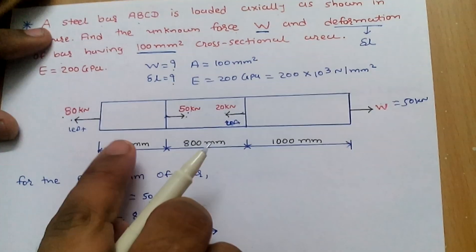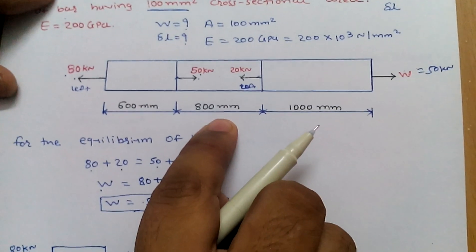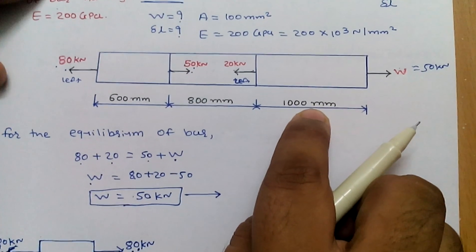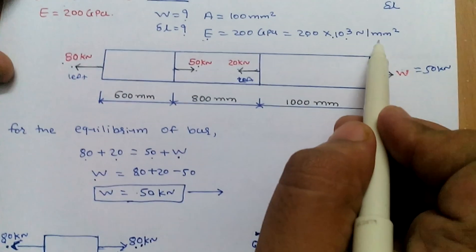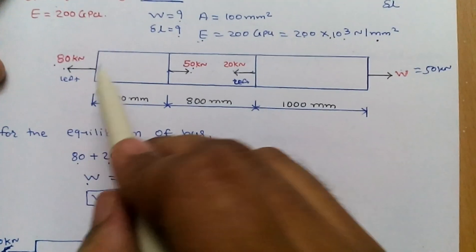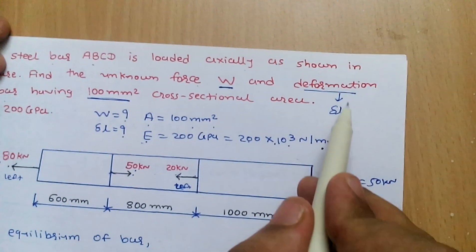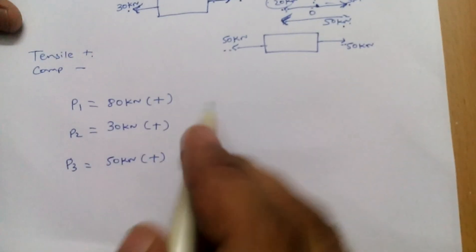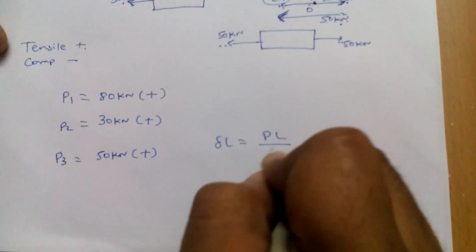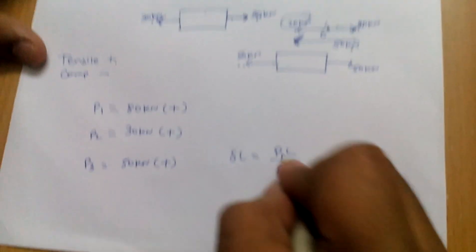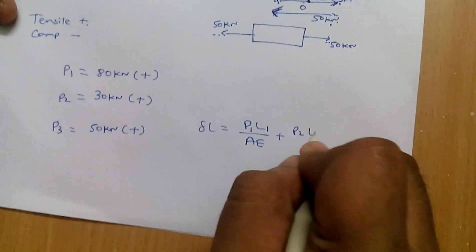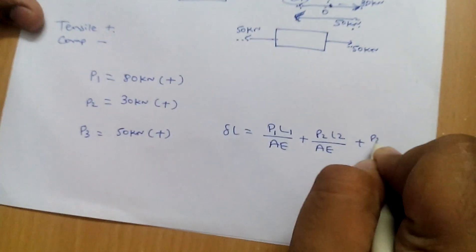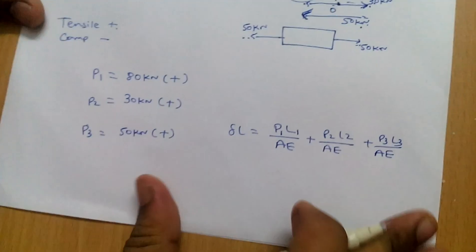The lengths given are: L1 equals 600 mm, L2 equals 800 mm, and L3 equals 1000 mm. Modulus of elasticity is the same for all: E equals 200 multiplied by 10 raised to 3 Newton per mm square. The area is also uniform, so A is common at 100 mm square. We need to find the deformation of the bar, delta L. The general equation is delta L equals PL divided by AE. Since there are 3 blocks: delta L equals P1 L1 divided by AE, plus P2 L2 divided by AE, plus P3 L3 divided by AE.